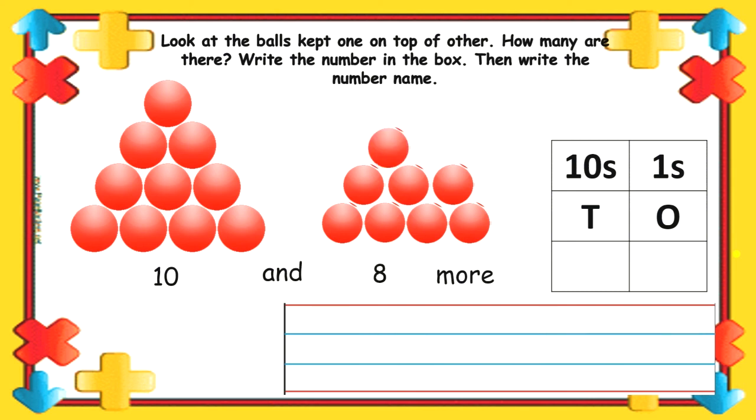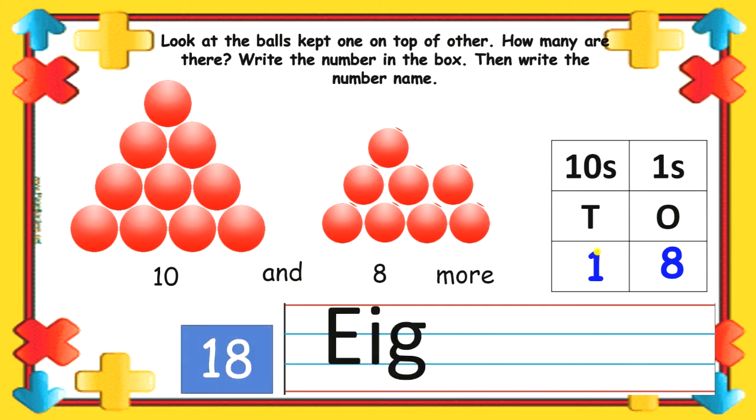Next 10 and 8 more. How many more? 8. It becomes 18. So, we write 8 in 1's place and 1 in 10's place. Spelling is E-I-G-H-T-E-E-N.